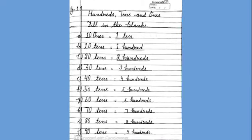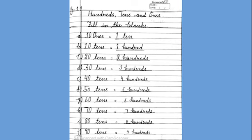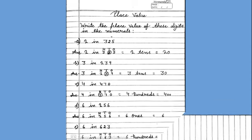Now, turn next page and write heading 100s, 10s and 1s. And leave line and write fill in the blanks. Then leave line and write 1st blank. 10 1s is equal to 1, 10. Then leave line 10. 10 10s is equal to 100. Then you will complete this till 90. And complete this page. Now, turn next page.